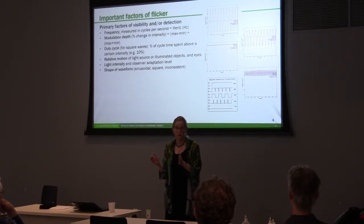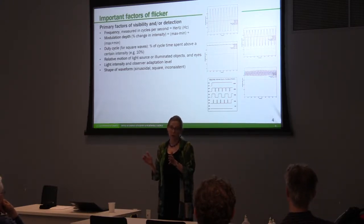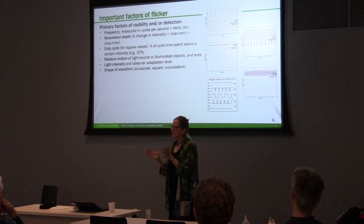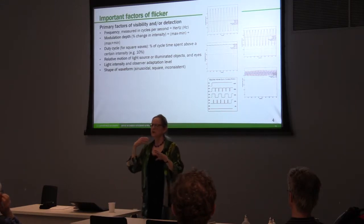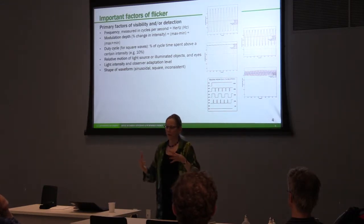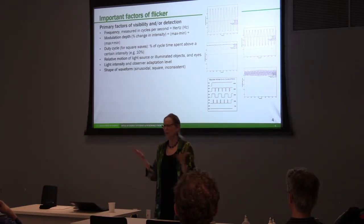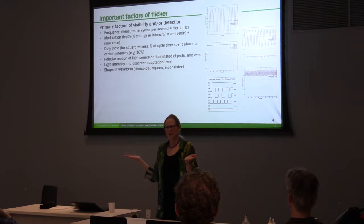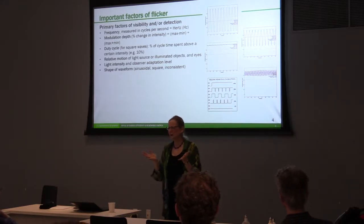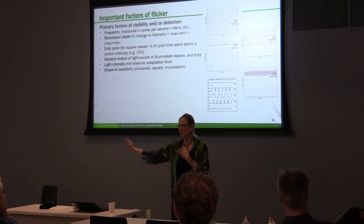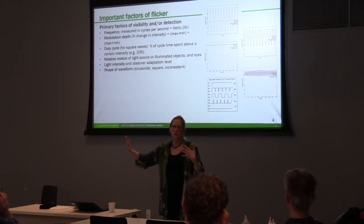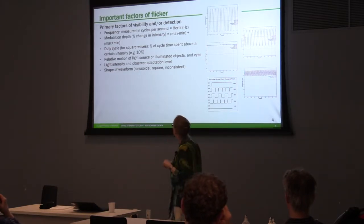Most of the time your eyes are moving. Even when you're reading, your eyes are going through saccades — jumping across a line of text — and even that is often enough to pick up certain kinds of flicker. I find the definitions of flicker where your eyes are not moving and the light source is not moving somewhat specious. Does it matter whether the light source is moving or your eye is moving? No — you've got relative motion between the two.